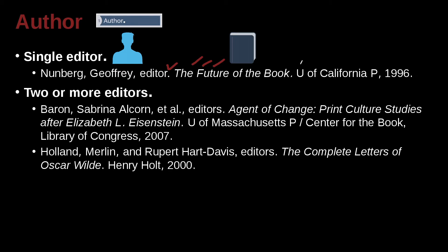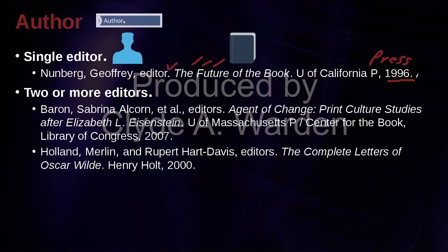Where is it from? It's from University of California P, meaning Press. University Press — that's a normal abbreviation under MLA guidelines — comma, 1996. 1996 being the year of publication for that book.